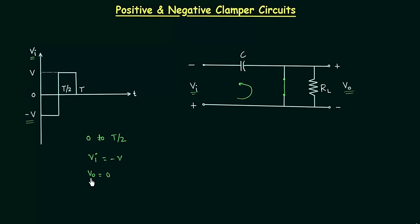Vo is equal to 0. The output voltage is equal to 0 because there will be no current through the load resistance. Current will follow the least resistance path, and the short circuit has 0 resistance. Now I have to calculate the voltage across capacitor C, let's call it Vc. This plate is connected to the negative terminal, so it is negatively charged. This plate is connected to the positive terminal, so it is positively charged.